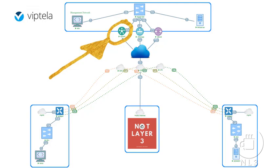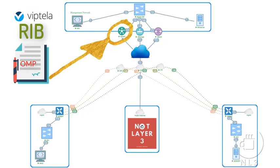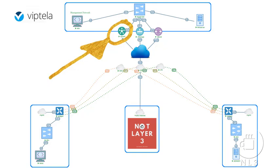The vSmart controller maintains a centralized route table, or RIB — Routing Information Base — that stores all route information called OMP routes learned from the vEdge router and any other vSmart controllers in the SD-WAN network. Based on the configured policy, the vSmart controller shares this route information with Viptela network devices so they can communicate with each other. The vSmart controller is just software that runs on a VM or virtual machine on a server configured with ESXi, VMware, or even Linux KVM.